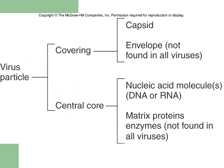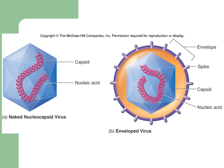A virus particle contains a central core of either DNA or RNA nucleic acid molecules, covered by the capsid. Some viruses, but not all, also have an envelope — those without are called naked viruses. To the left in this slide, you have a naked virus which is just the nucleocapsid — nucleic acid surrounded by the capsid, no envelope. On the right-hand side is a schematic of an enveloped virus, with the nucleic acid, then the capsid, then an envelope surrounding it. Some viruses also have glycoprotein spikes coming off of them.